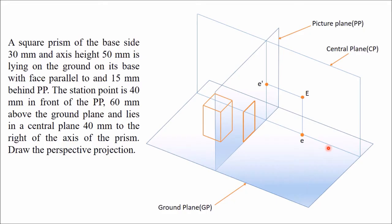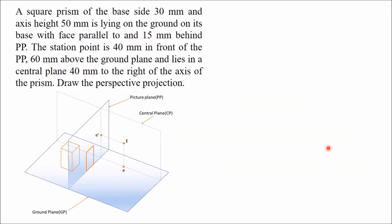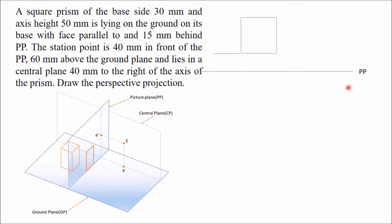Now we will draw this on paper. First, draw the top view of the picture plane — when viewed from top it appears as a line, so draw this line and label it as the picture plane. Then draw the top view of the square prism — from the top you see a square with one side parallel to the PP, at a distance of 15mm. Mark and name the eight corner points: top corners A, B, C, D and bottom corners 1, 2, 3, 4.